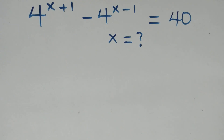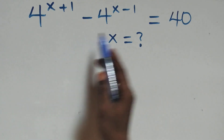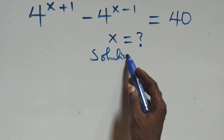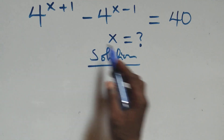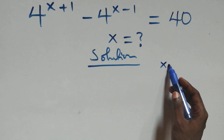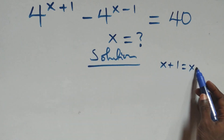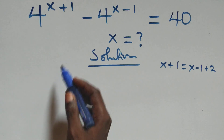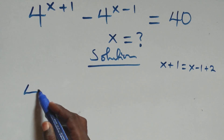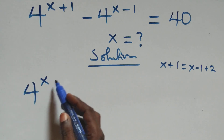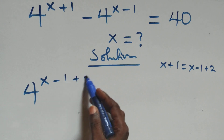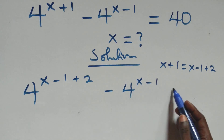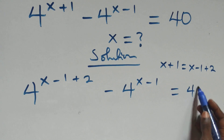Hello everyone, welcome. We solve this exponential equation. We rewrite x plus one as x minus one plus two, so 4 raised to the power x minus one plus two, minus 4 raised to the power x minus one, equals 40.